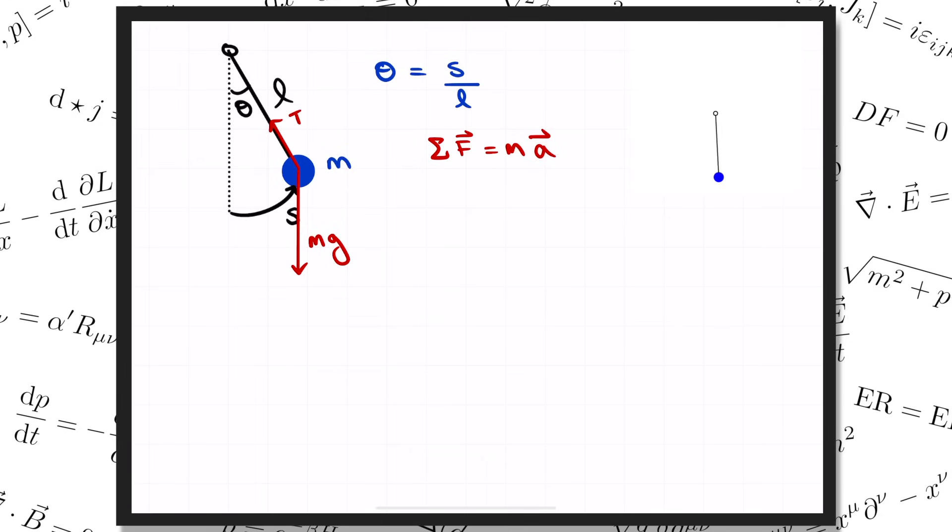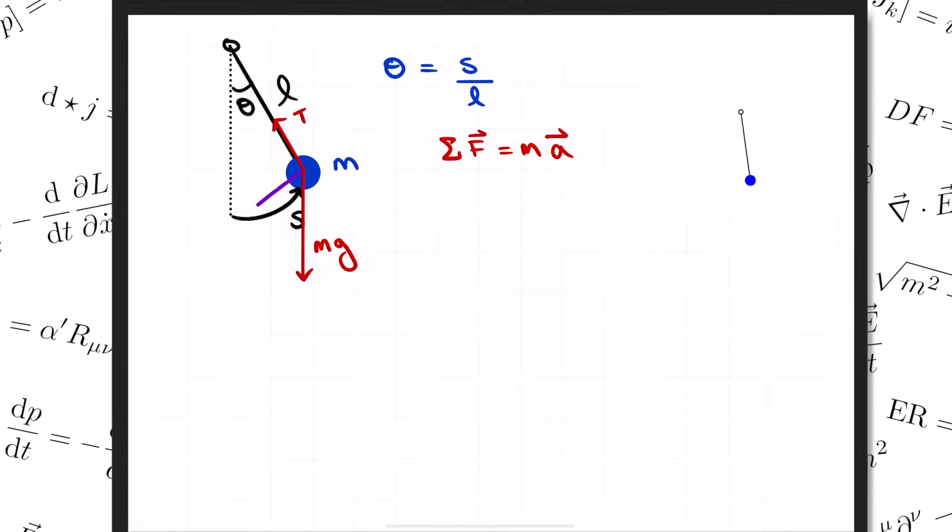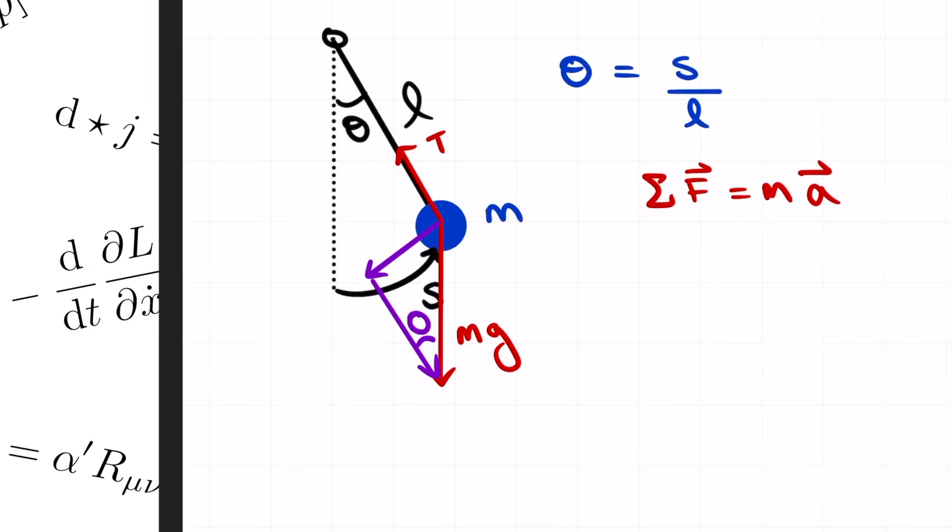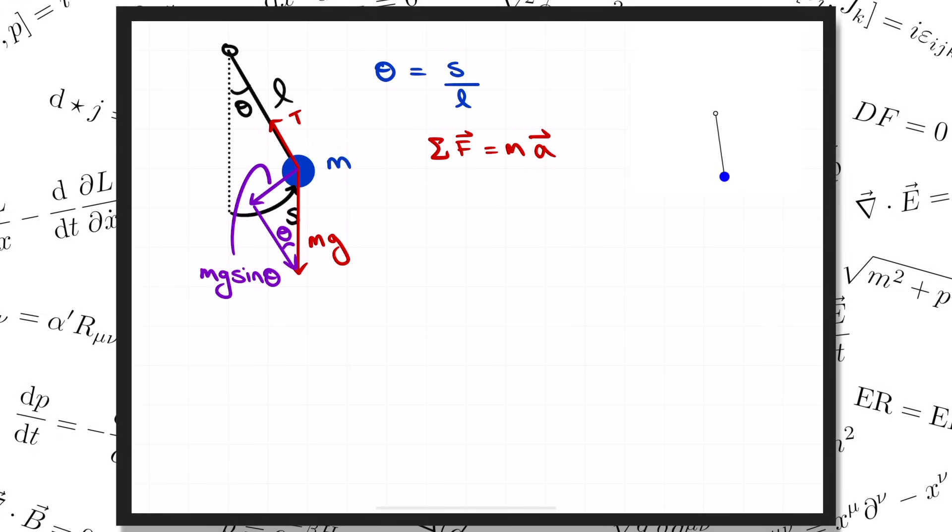F equals ma is a vector equation, but what we're really interested in here is the tangential component, meaning the component of the force and the acceleration that point along the circle where the particle is constrained to move. The tension isn't contributing anything here, that's pointing straight toward the center of the circle, which is perpendicular to the tangent direction. So the only relevant force is actually the tangential component of gravity. With a little geometry work, you can see this is mg sine theta pointing back toward the pendulum's equilibrium position. So f equals ma for the arc length coordinate s simply reads m s double dot equals minus mg sine theta.